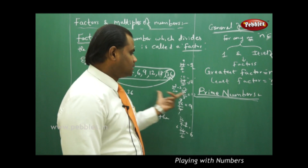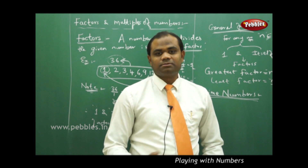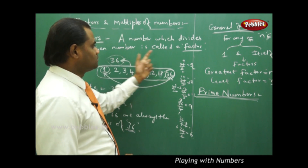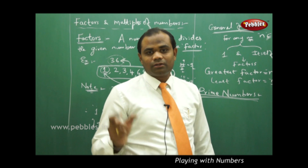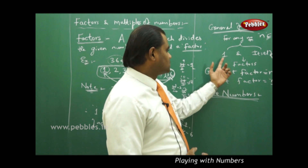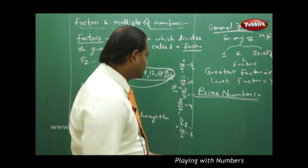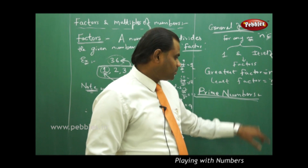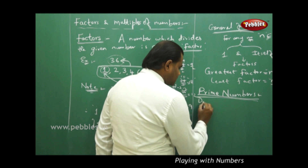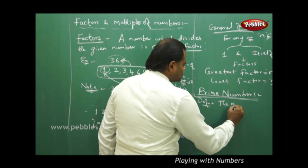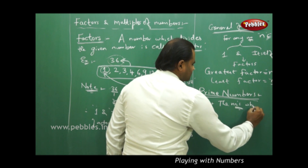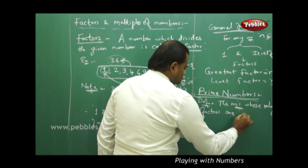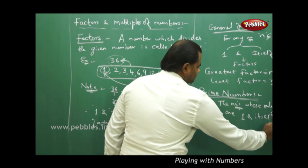With the basic definition of a factor, let's see how prime numbers are defined in terms of factors. A factor is a number which divides the given number. Prime numbers are those numbers which have their factors as 1 and itself only. There will not be any factors in between — the number itself and 1 will be the only factors for prime numbers. So prime numbers are defined as numbers whose only factors are 1 and itself.